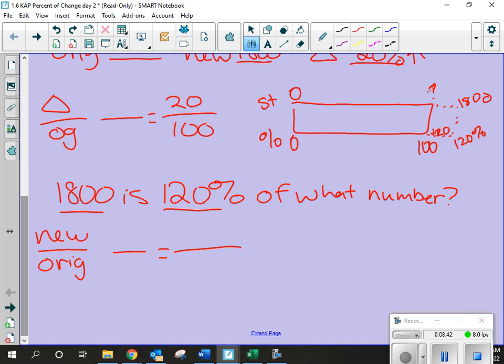Okay? So, let's see if we can fill out that. Can y'all help me out? What's my new amount? I know that it's going to be 1,800. Do I know the number to go below that? No. But do I know my percent? Yeah. Not 20. The new percent is 120 over 100. Are y'all good with that setup? Yes.